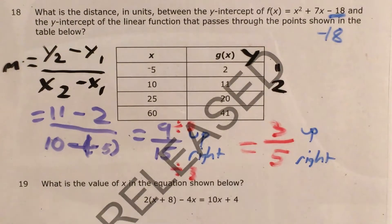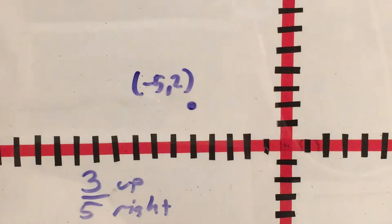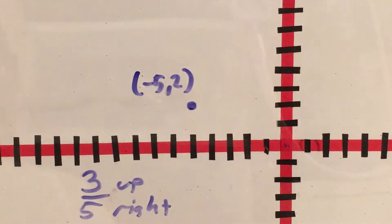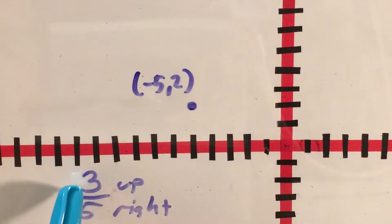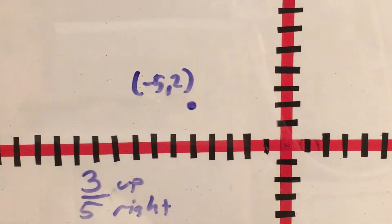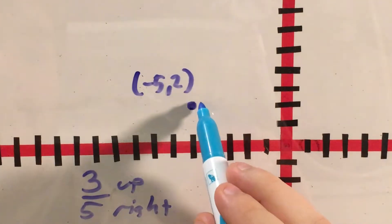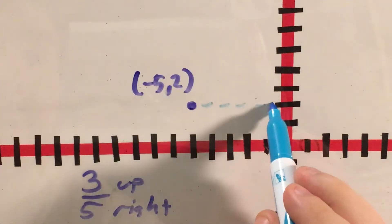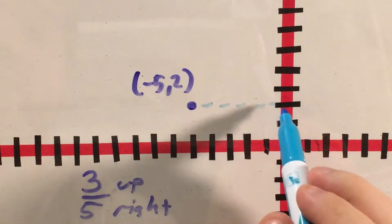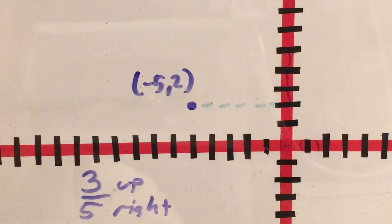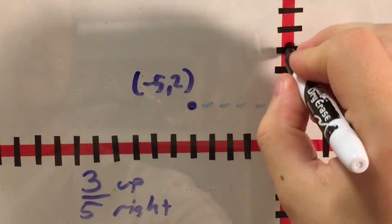Now I need to take this pattern of slope and actually put it on a graph. Here's my graph — I have quadrants 2 and 3 here that I'm primarily focused on. I have the point negative 5 and 2 graphed already, and now I'm going to use my slope of 3 squares up for every 5 squares right to figure out my y-intercept. I can go 1, 2, 3, 4, 5 right, which gets me right on the y-axis, and then 1, 2, 3 up.